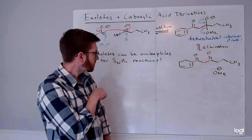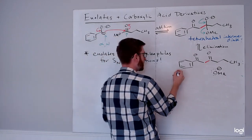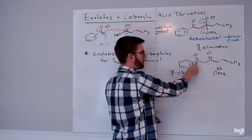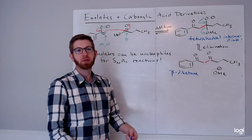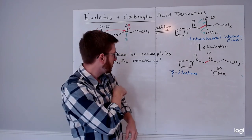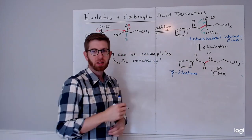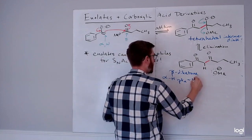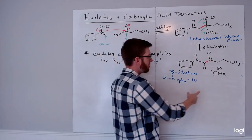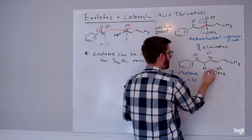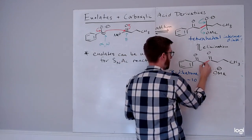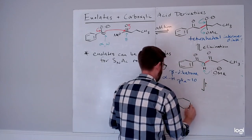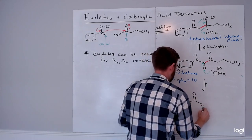There's one other term I want to introduce here: we're going to call this product a beta-diketone. Beta-diketone because, relative to one of the carbonyls, the other carbonyl is at the beta position, and both of those carbonyls are ketone functional groups. Looking at the structure, there's a very acidic proton - the alpha hydrogen here has a pKa of about 10.